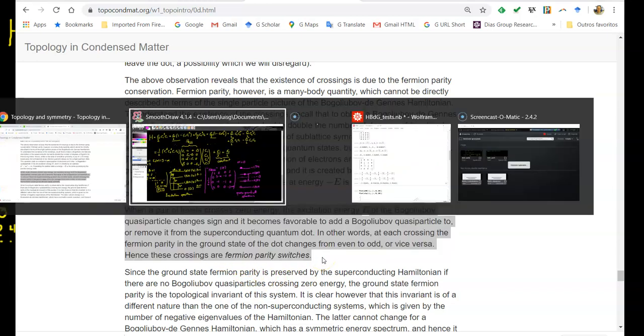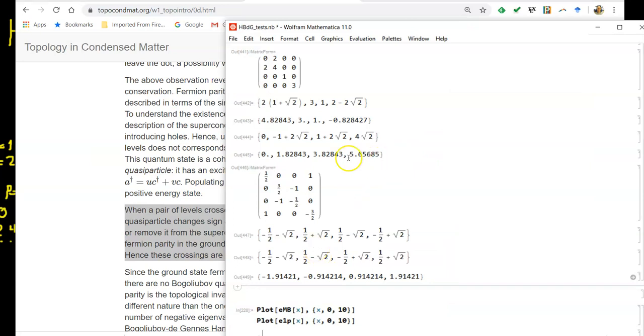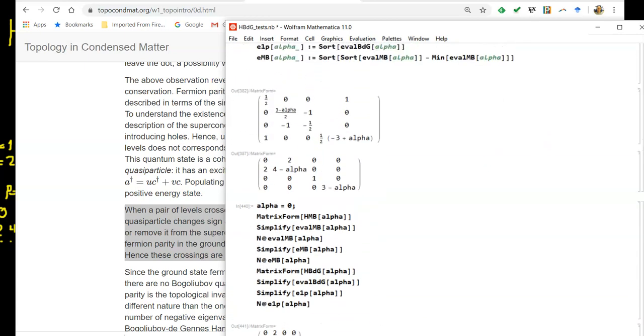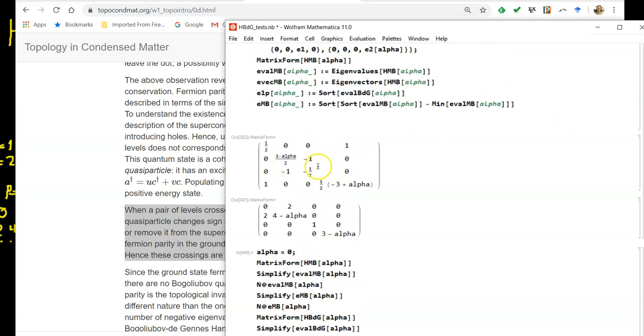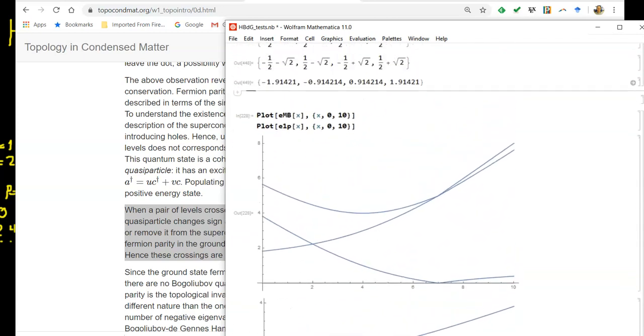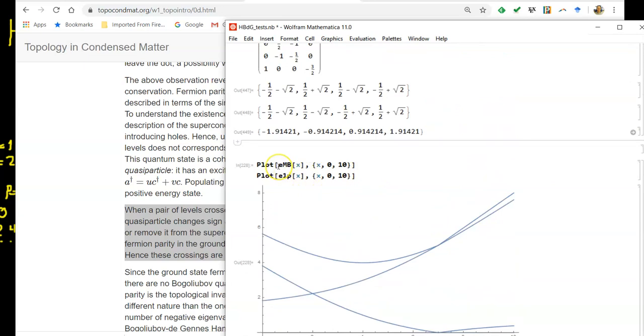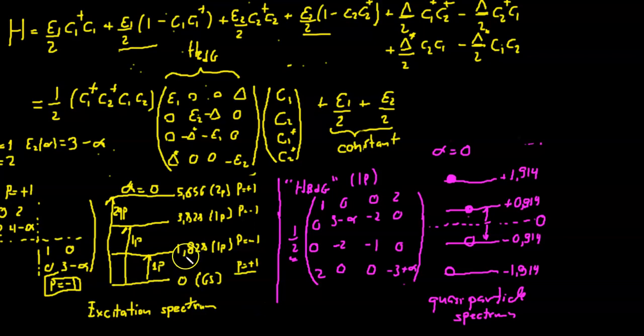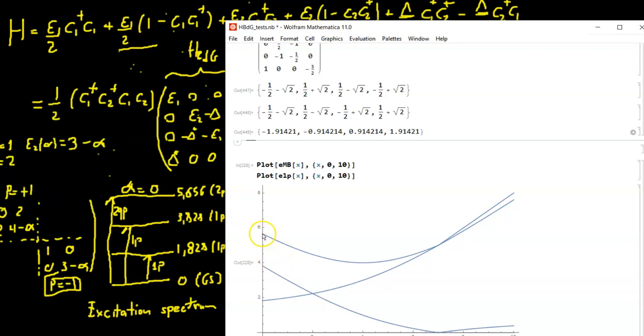Well, we did precisely that by adding this parameter alpha here into the Hamiltonian. And this is how both the Bogoliubov Hamiltonian looks like and also the many-body Hamiltonian looks like in terms of alpha. And we plot the eigenvalues as a function of alpha. So let's first get the many-body state. For alpha equals zero, that's what we have. We have zero, 1.828, 3.828, 5.626, that's what I get here.